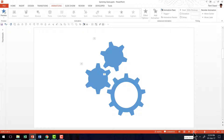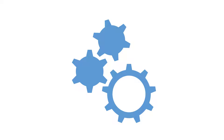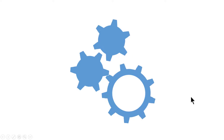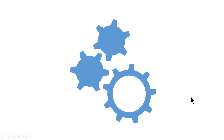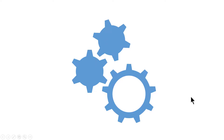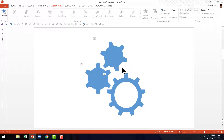Now let us go to the slideshow mode and see how this operates. On a click you can see that all three gears are rotating. The only problem is after a little time the gears seem to stop. We want these gears to rotate endlessly till the time we go to the next slide. So how do we get that option going?